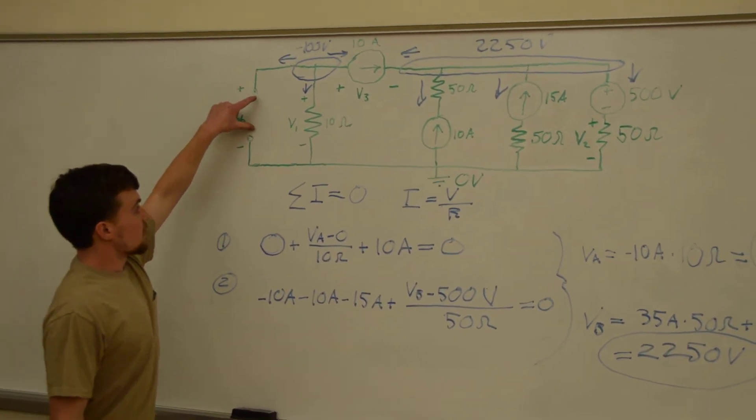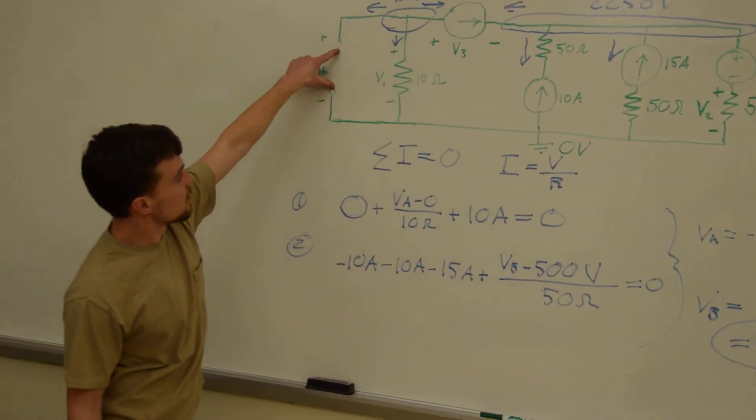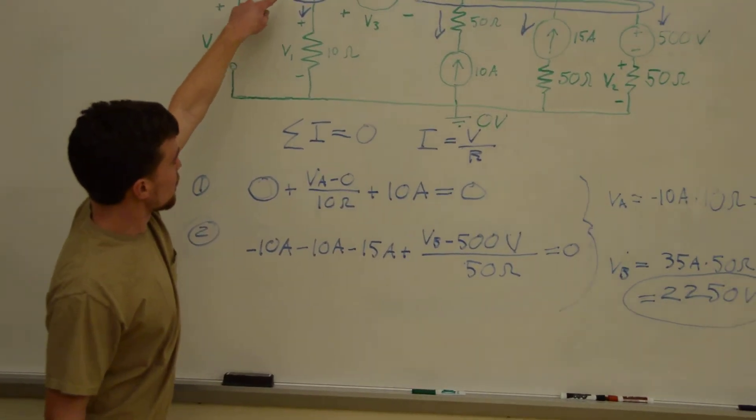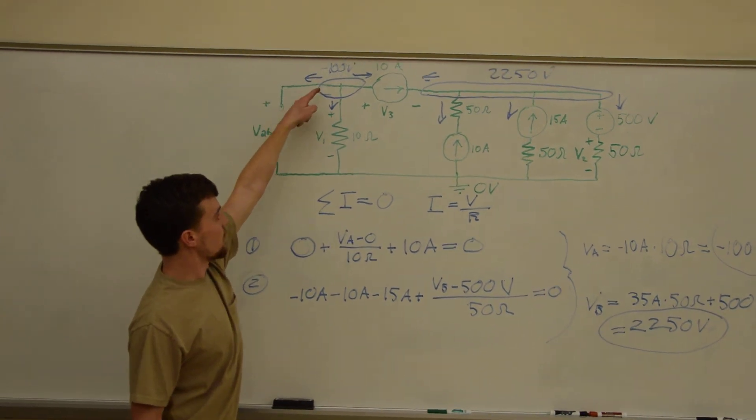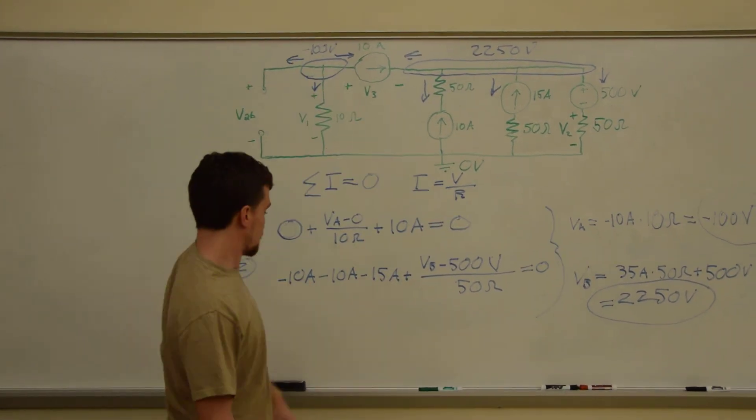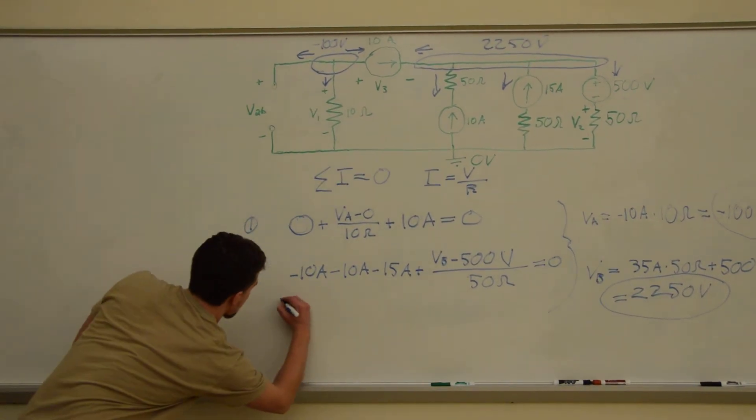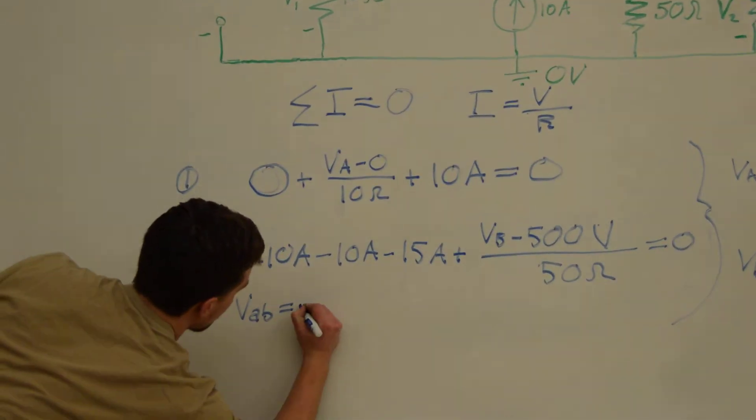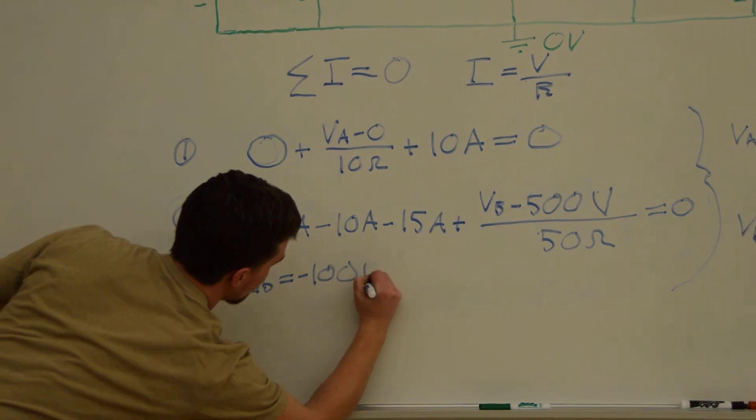VAB is the voltage across that gap, which is also equal to the voltage across here, which is negative 100 volts. VAB is equal to negative 100 volts.